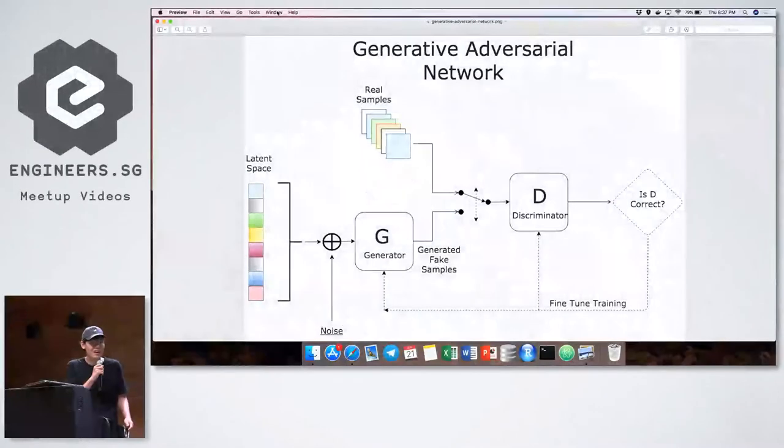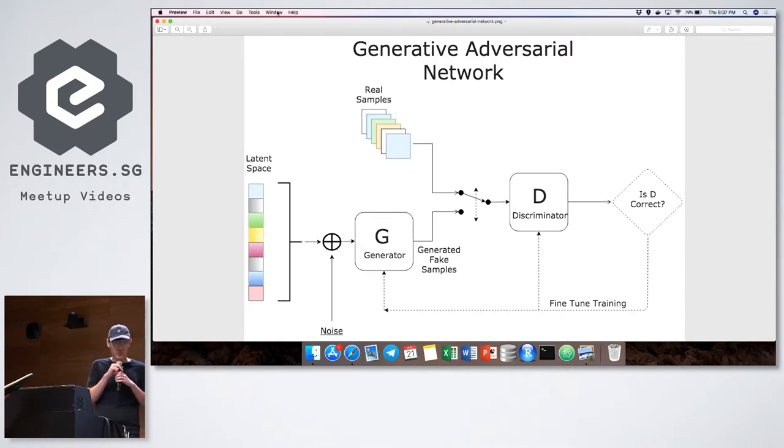Hi, so my name is Bolin, relatively new to data science and machine learning, so hopefully you don't have too many questions. I'm here to talk about generative adversarial networks, GANs for short. I'll be using GANs from here henceforth.